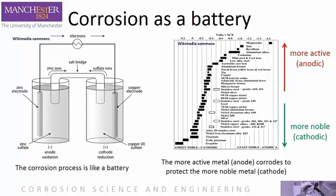How active a metal is can be measured using the galvanic series. In this example, the more active metals — magnesium, zinc, etc. — are at the top of the table, while the more noble metals — gold, copper, etc. — are at the bottom.